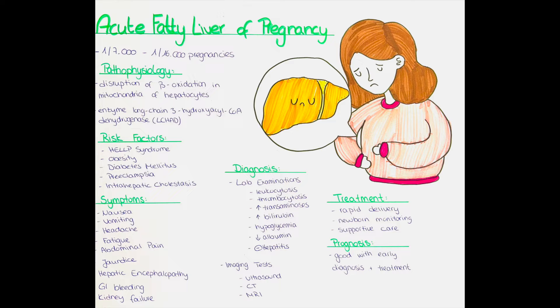In acute fatty liver of pregnancy, the total fat amount in the liver is typically over 5% of its total weight. The incidence of acute fatty liver in pregnancy is estimated to be between 1 in 7,000 and 1 in 16,000 pregnancies.